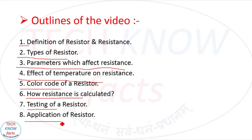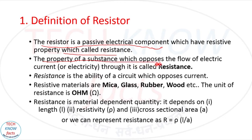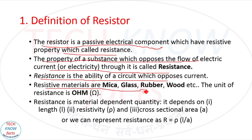Number one is the definition of resistor. What is a resistor? The resistor is a passive electrical component which has a resistive property called resistance. The property of a substance which opposes the flow of electric current is called resistance. Resistance is the ability of a circuit to oppose current. Resistive materials are mica, glass, rubber, wood, etc. The unit of resistance is ohm, represented by the Greek symbol omega.